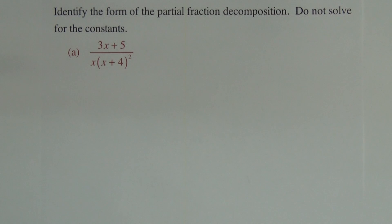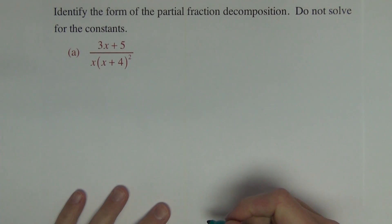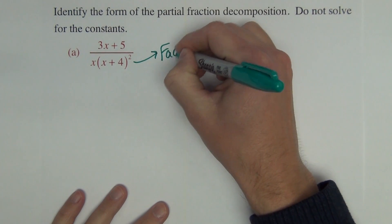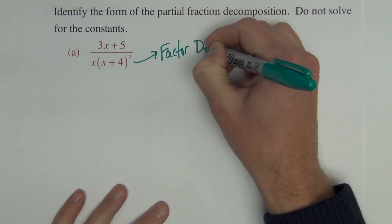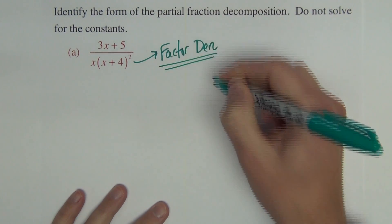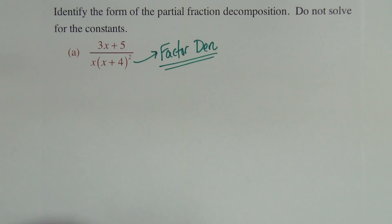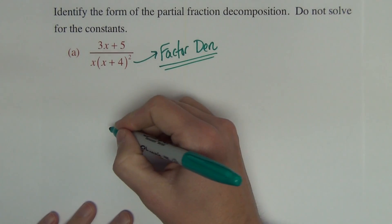Directions say identify the form of the partial fraction decomposition; do not solve for the constants. It says identify because on the exam it's going to be multiple choice, so you'll be presented with options and have to choose the correct one. The first thing we must do is completely factor the denominator — but in this case, it is already factored.